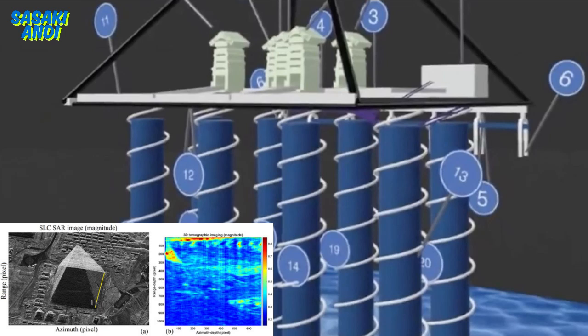And the really crucial part here is that this method actually gets around the granite issue, because they're not trying to send a signal through it, they're just listening to what's already happening. So what do they see? I mean, obviously they must have seen what we already know about the pyramid, right, like the king's chamber?